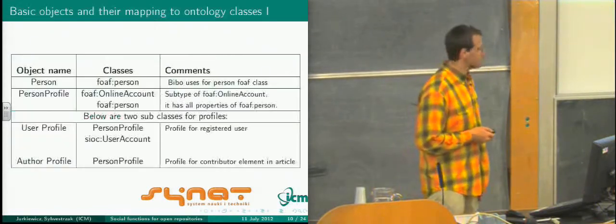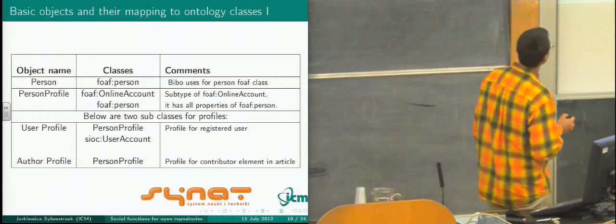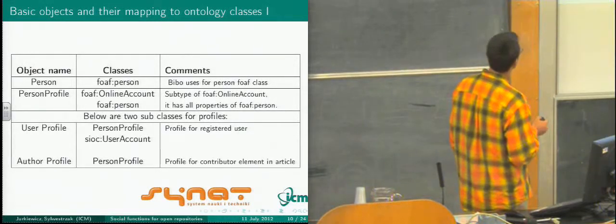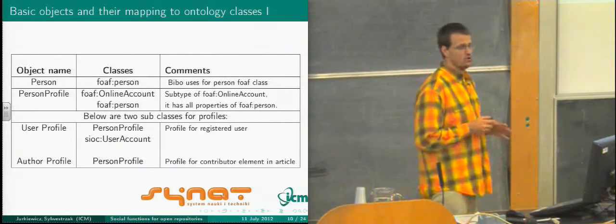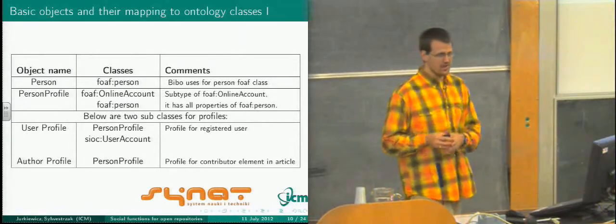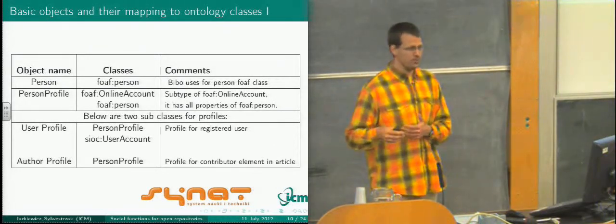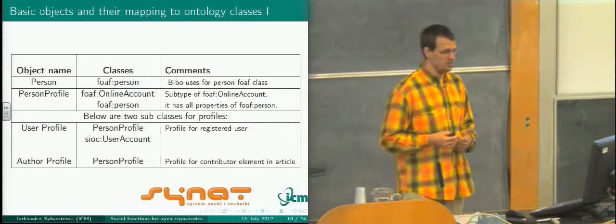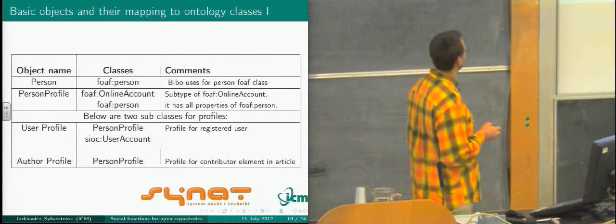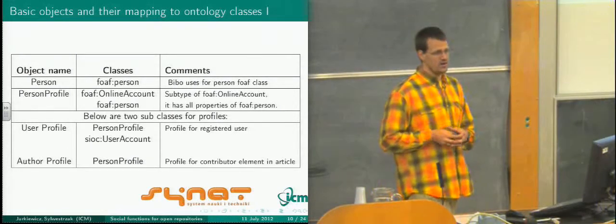Now let's get to the analysis. In the table, I will show you the objects we need. Of course we have the person. But we have the person and we have the person profile — I'll show you the difference, because it's a different thing. Is it a person who exists in the real world? Or is it a person profile shown on a Facebook page, a LinkedIn page, or the person description on the cover of a book? It's different information and different behavior, so we need to distinguish between person and person profile.